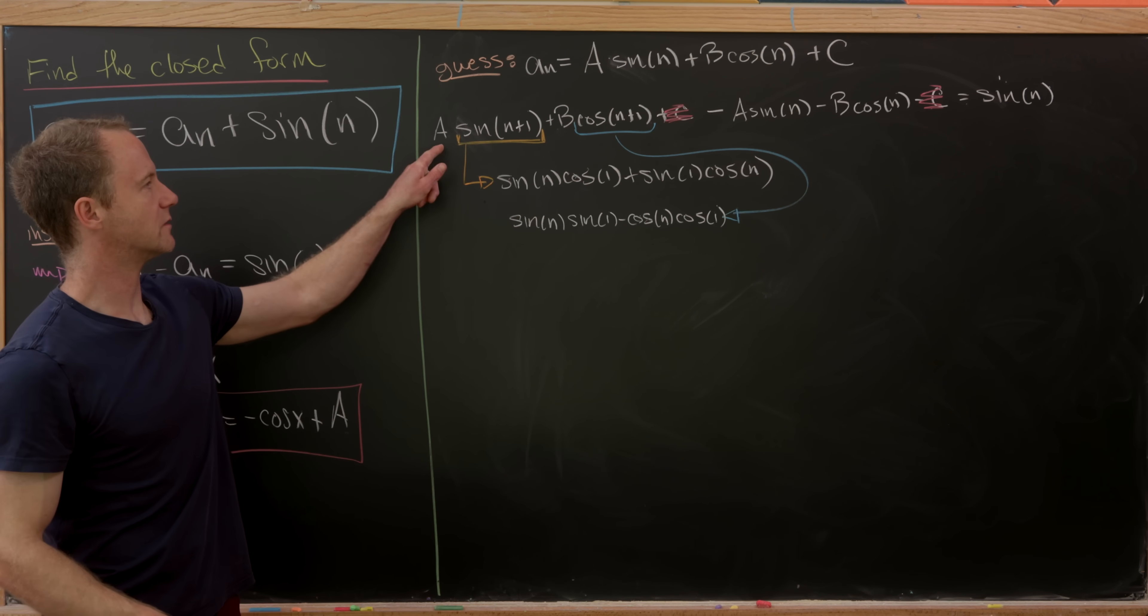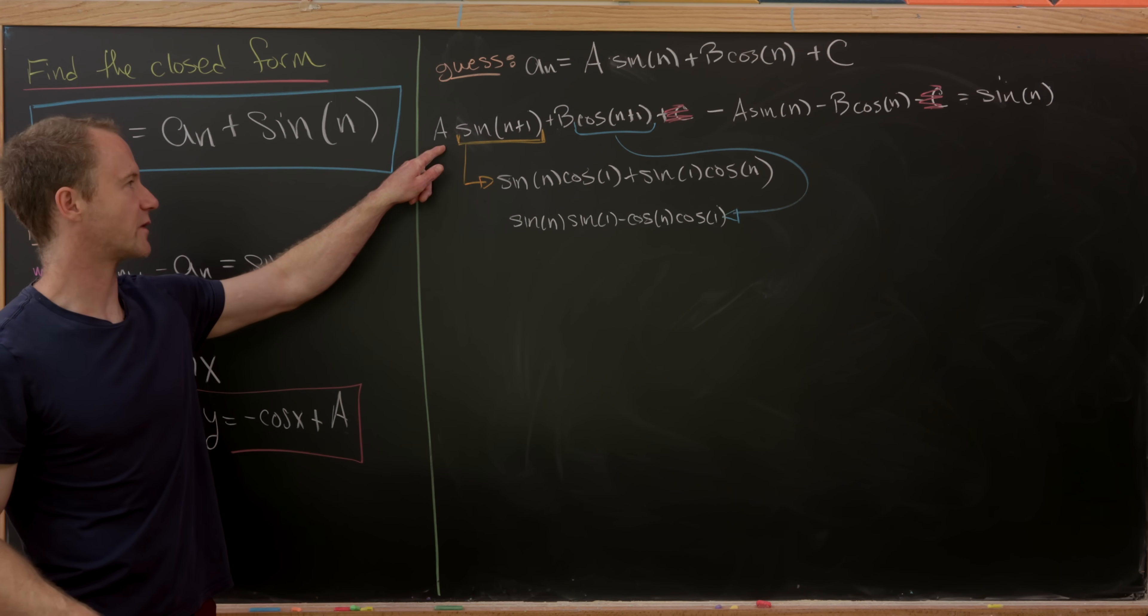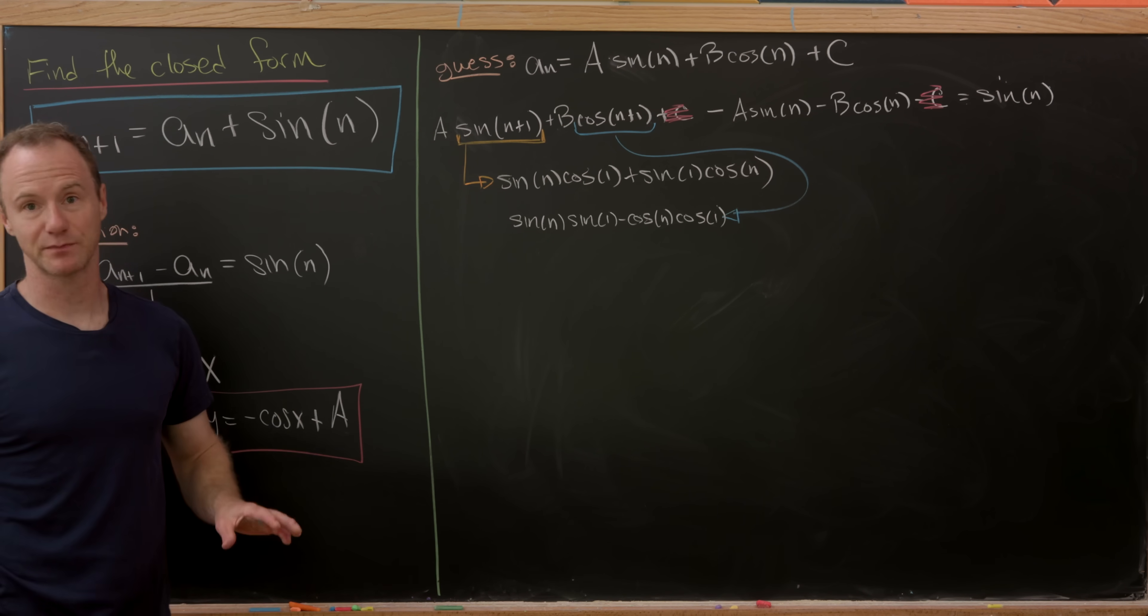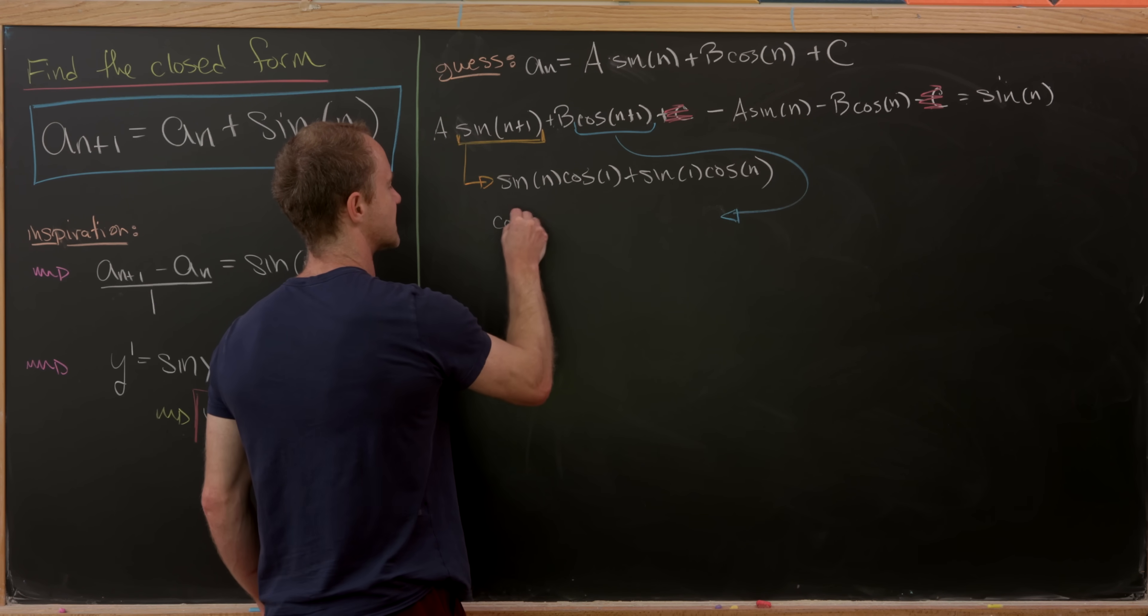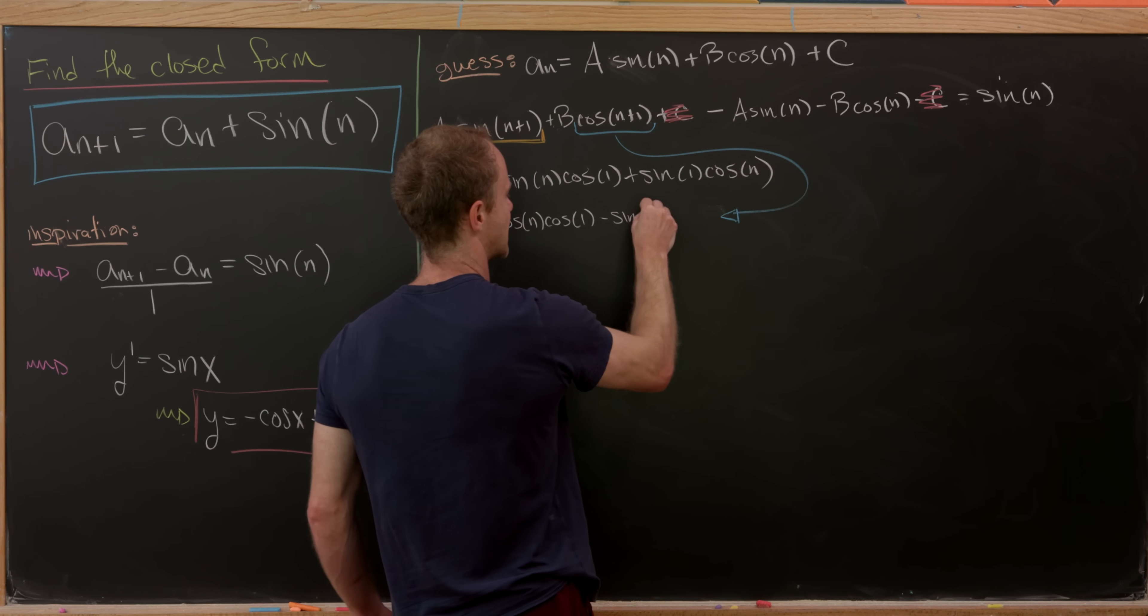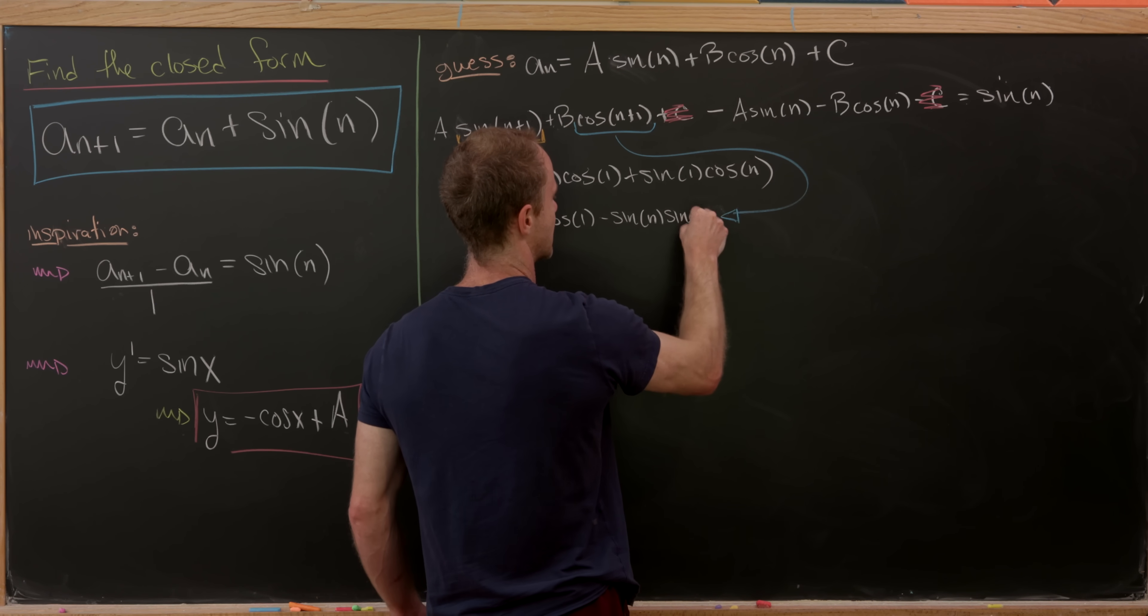So now let's plug those into the place where we see sine of n plus 1 and cosine of n plus 1 and see what sort of simplification occurs. So this gives us cosine of n times cosine of 1 minus sine of n times sine of 1.